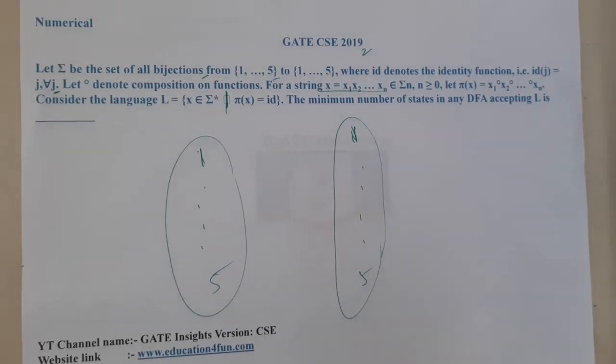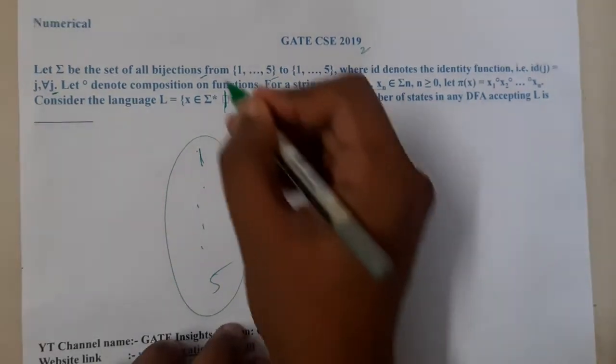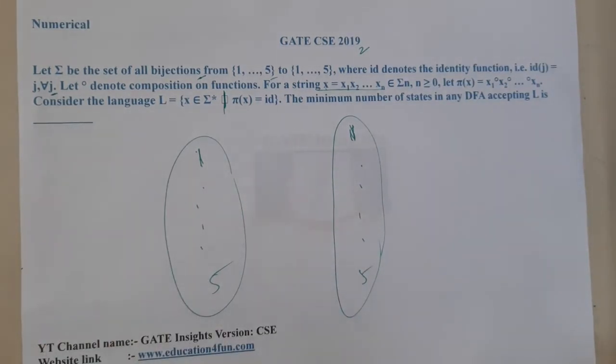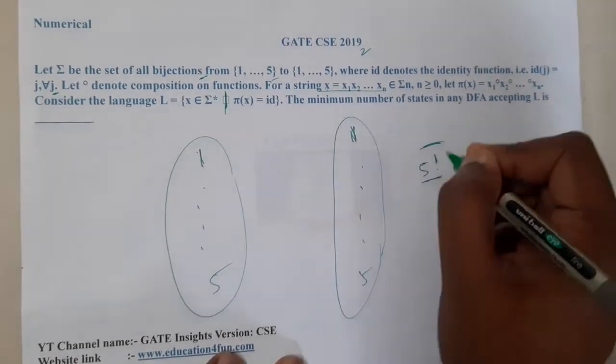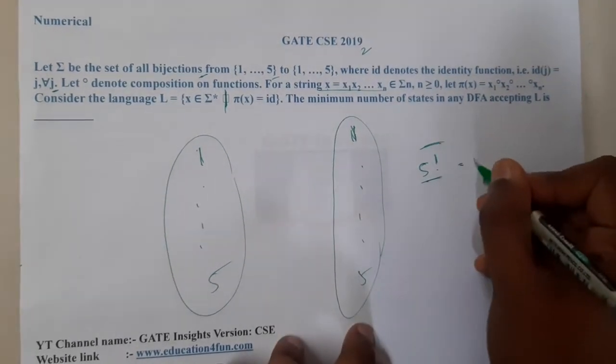Whenever we are talking about a bijective function, what will be the total number of bijective functions for this particular case? It is five to five. It is nothing but 5 factorial. Different 5 factorial functions are possible, which is 120.